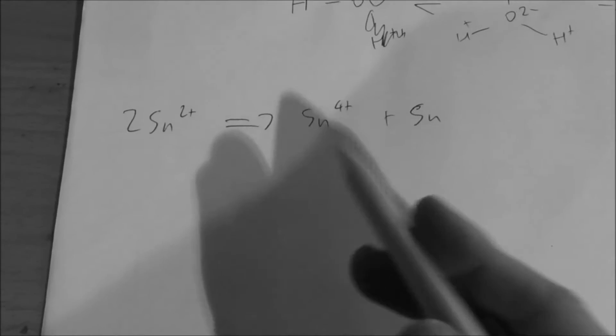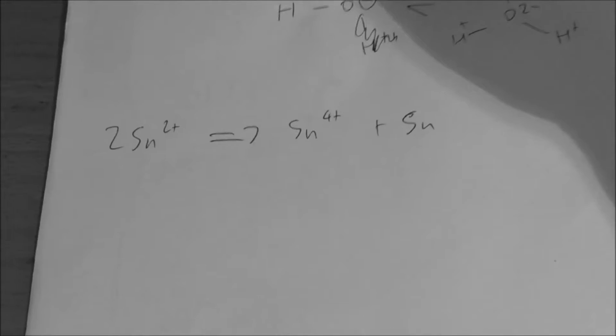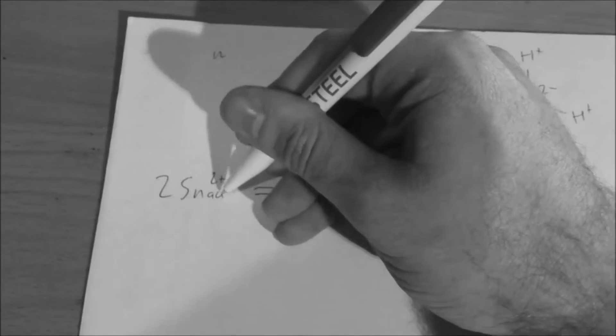So, tin 2 plus has been oxidized and reduced basically by itself. One of the tins has nicked two electrons off the other. This will generally stay in solution if it's in aqueous solution, and this will be deposited as a solid. Although this can react with further water, this kind of process can happen all over the place.